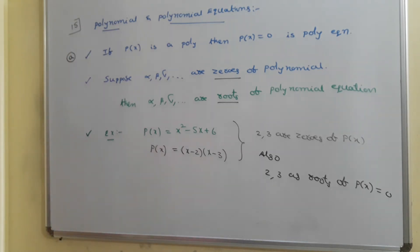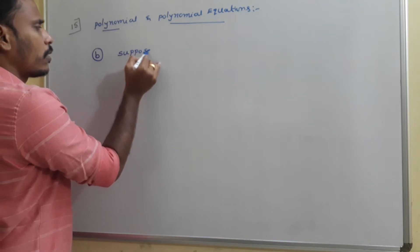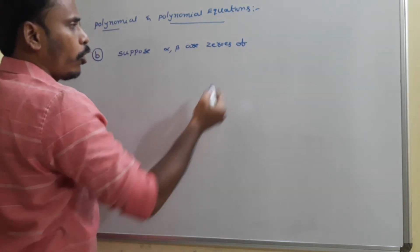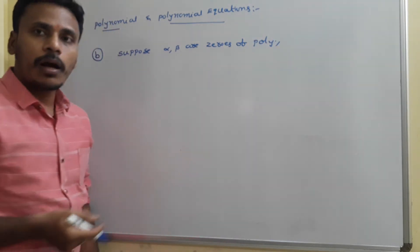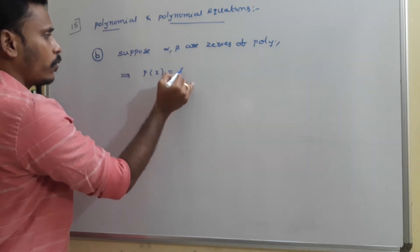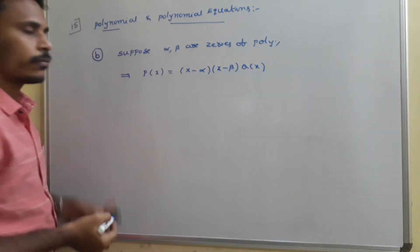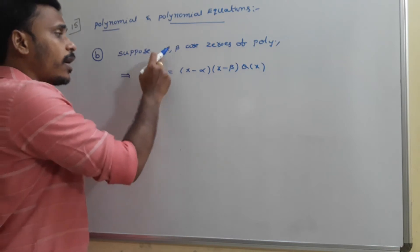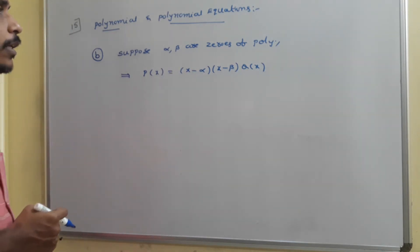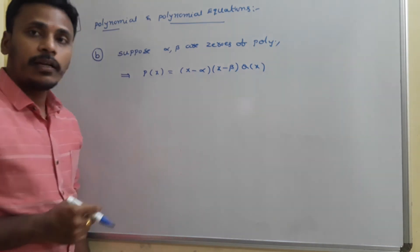Now, suppose alpha and beta are zeros of a polynomial. Then we write P(x) = (x - alpha)(x - beta) · Q(x). They are zeros but we are not sure that they are the only zeros. So P(x) = (x - alpha)(x - beta) · Q(x), and if they mention something about the degree of P(x), we will consider Q(x) accordingly.